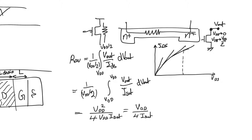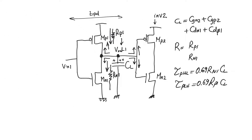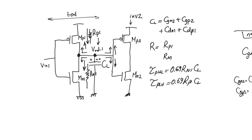We have now calculated C_GN, C_GP, C_DN, C_DP, and R_N and R_P. With C_gate_N2 = C_oxide * W_N2 * L_N2, C_gate_P2 = C_oxide * W_P2 * L_P2, and drain capacitances C_j * W * L_drain, plus resistance R = V_DD / (4 * I_SAT), we can compute the time constant representing the delay for each transition.